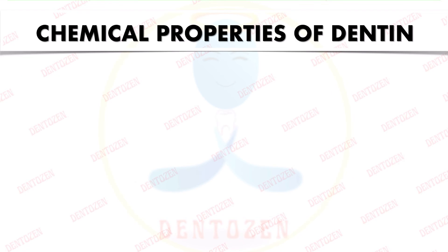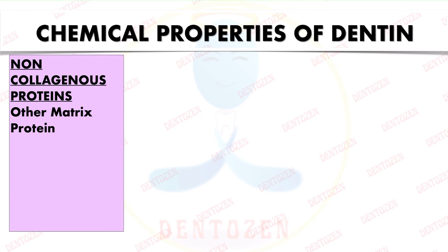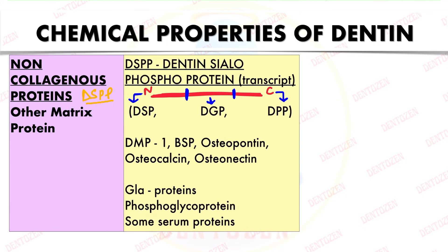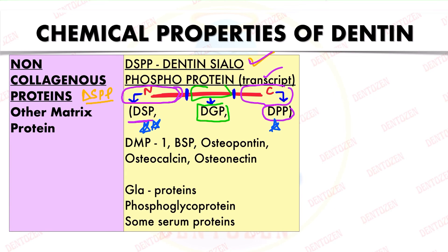Non-collagenous proteins, though present in smaller quantities, are also very important. A key protein is DSPP (dentine sialoprotein phosphoprotein), which is secreted as one large protein and then cleaved into three proteins: dentine sialoprotein (DSP, N-terminal portion), dentine phosphoprotein (DPP, C-terminal portion), and dentine glycoprotein (DGP, the central portion). DSP and DPP are the major non-collagenous proteins of dentine.